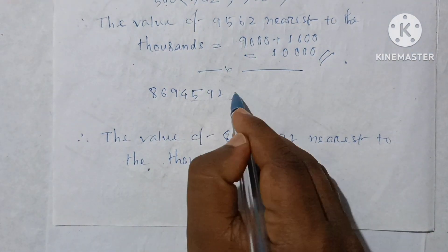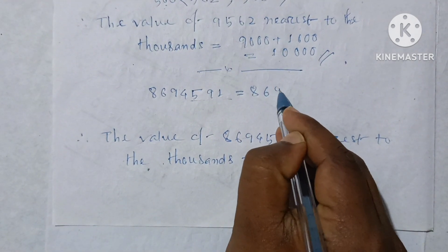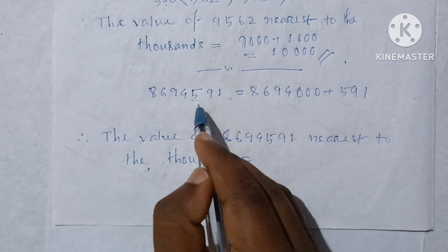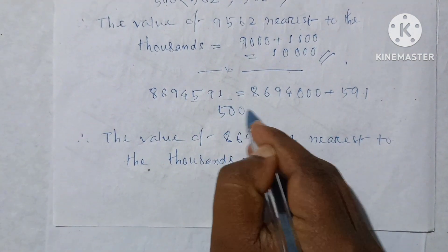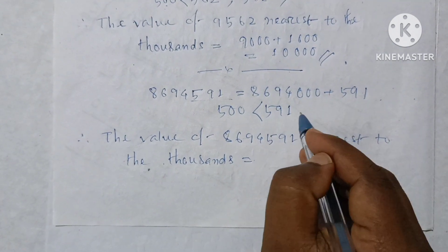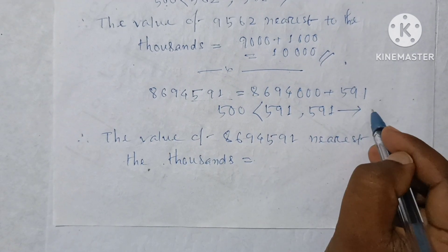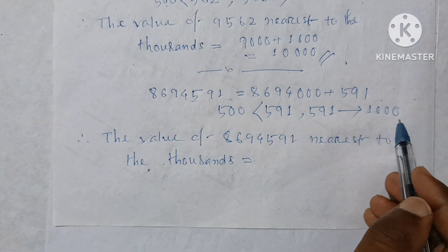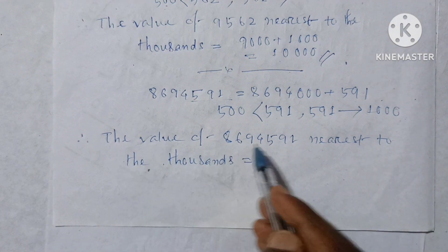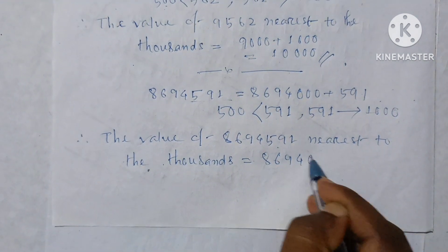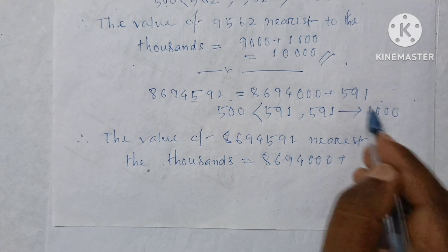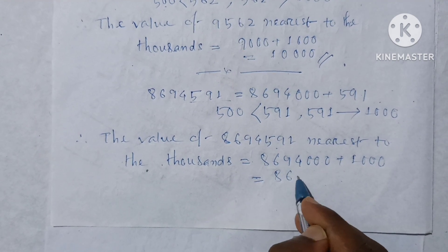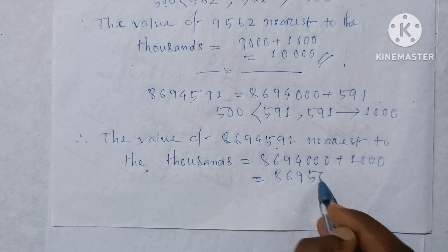Next, three digits: 869,591 written as 869,000 plus 591. Since 591 is greater than 500, it rounds up to 1000. So the value of 869,591 nearest to the thousand is 869,000 plus 1000 equal to 870,000. Answer: 870,000.